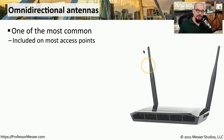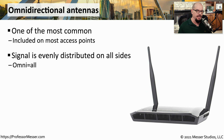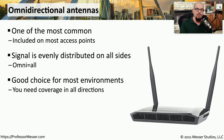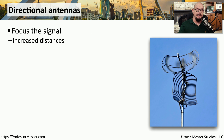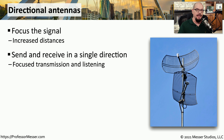Traditional access points use omnidirectional antennas, which are very common and distribute the signal evenly on all sides. This is a good choice when placing an access point in the middle of a building where you want even coverage all around. However, this doesn't give you many options for focusing the signal. A directional antenna allows you to focus that signal and is commonly used to extend an 802.11 wireless network over a longer distance, such as between buildings.